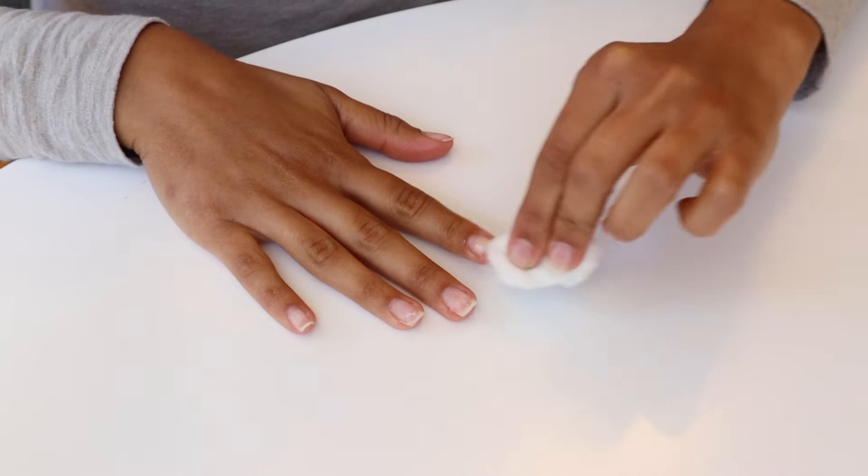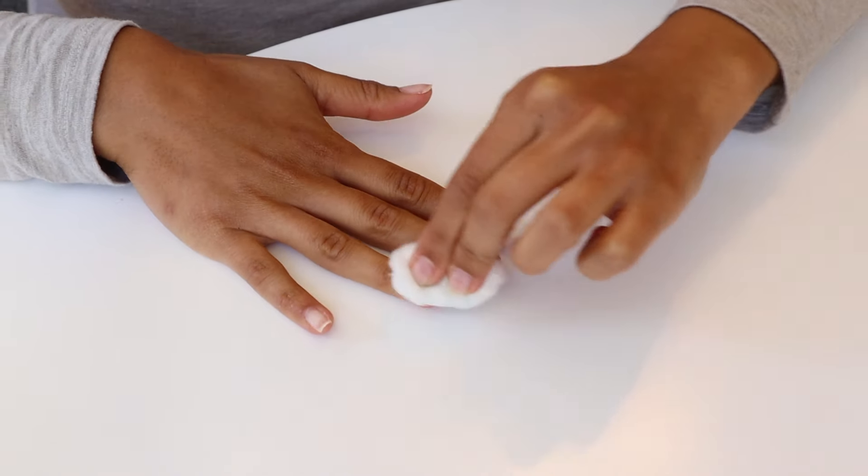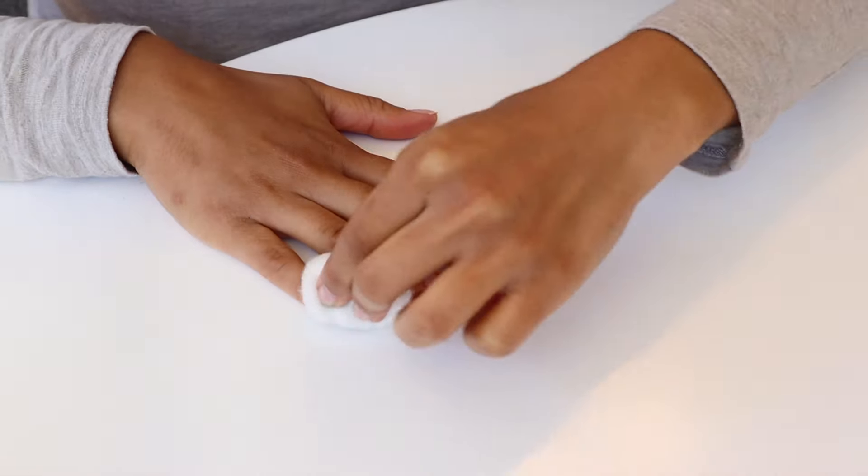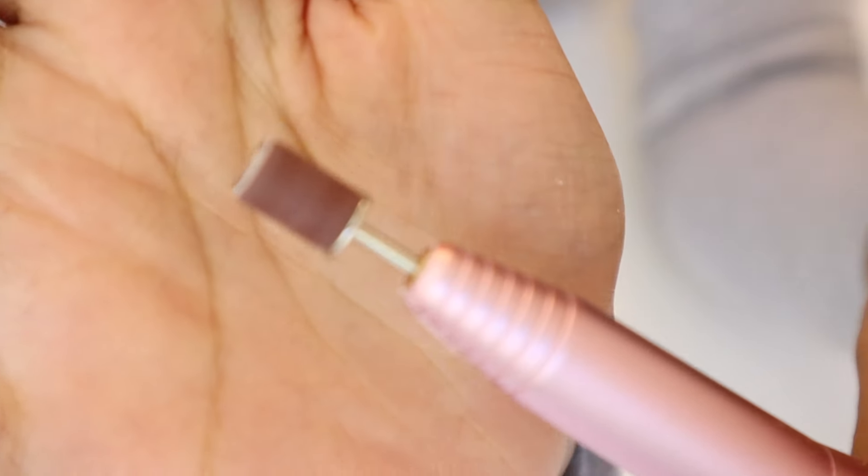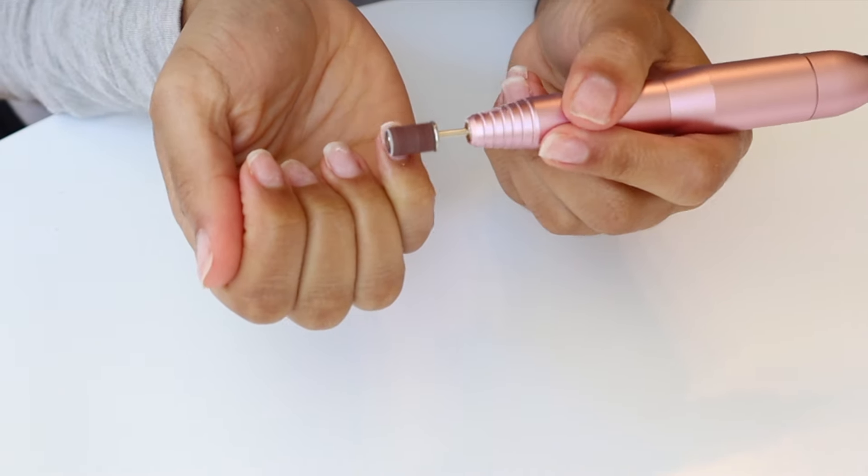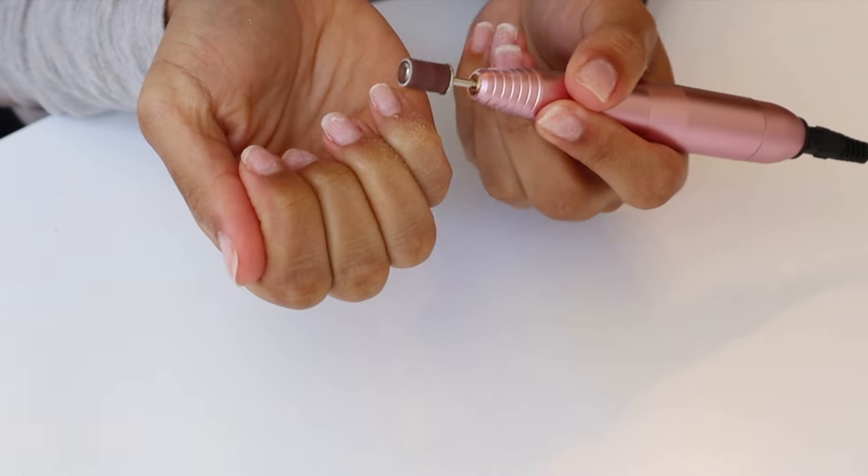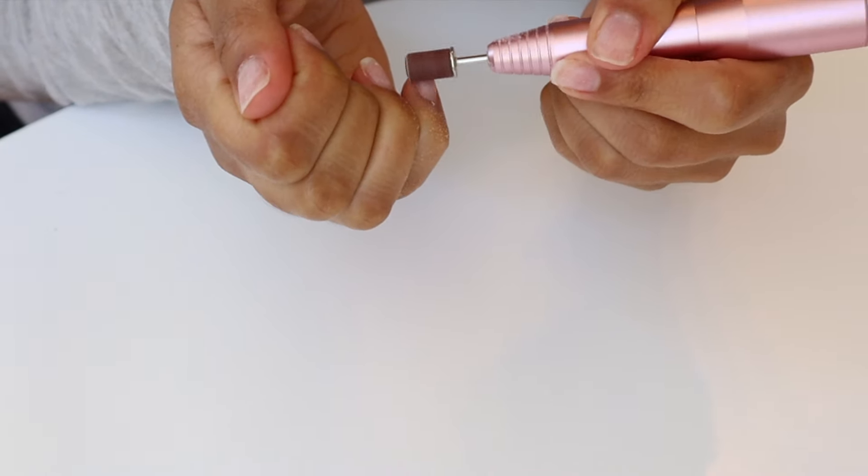So our first step today is going to be to remove any old nail polish that you might have. If you have gel polish, I have a video that teaches you how to remove that right over here. I will leave a link. Once you're done cleaning your nails, the next step is going to be to buff them out. I have an e-file, but like I said it's not necessary. You can use a nail buffer and this is just going to help later on once you start applying your polish.